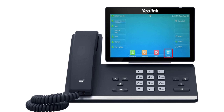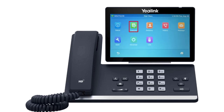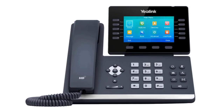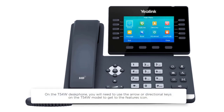To enable this feature, press the Menu soft key, then press Features. You'll be brought to the Features screen with call forwarding showing. Please note, on the T54W desk phone you'll need to use the arrow or directional keys on the T54W model to get to the Features icon.